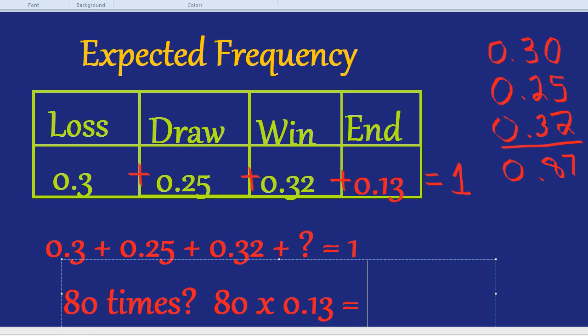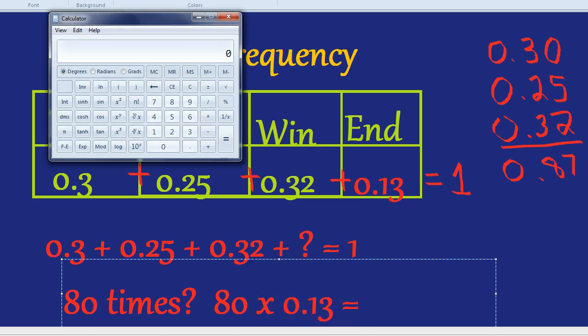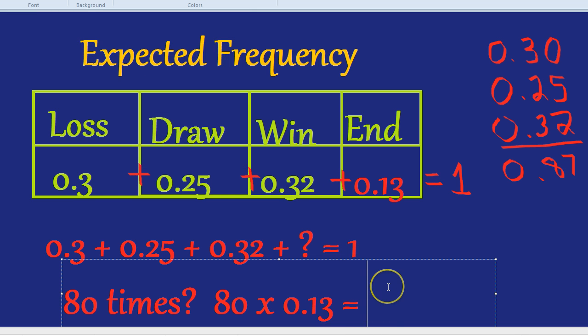And we can do that in the calculator again. That would be 80 times by 0.13, which is 10.4. So roughly speaking, the game would end prematurely 10 times.